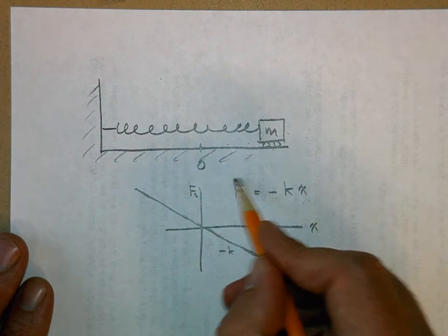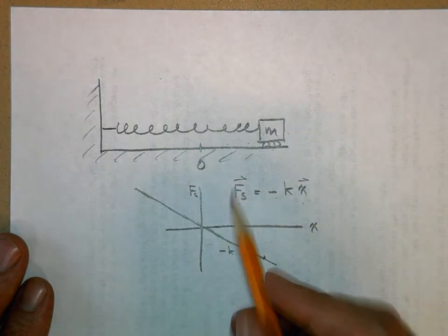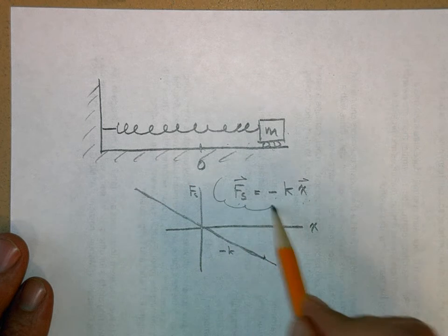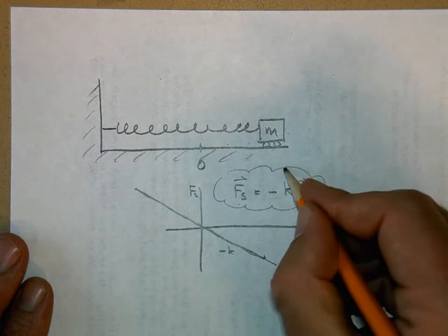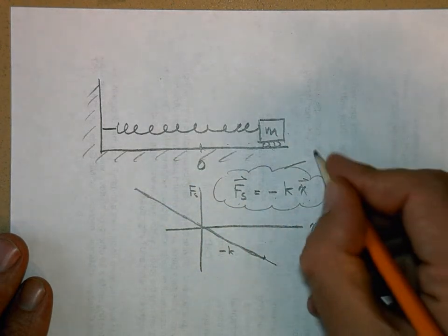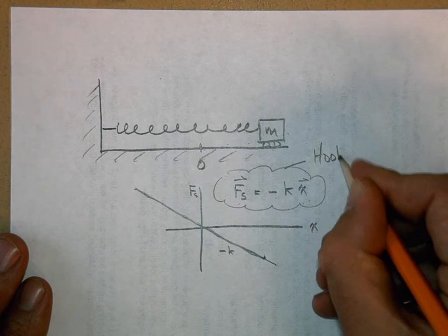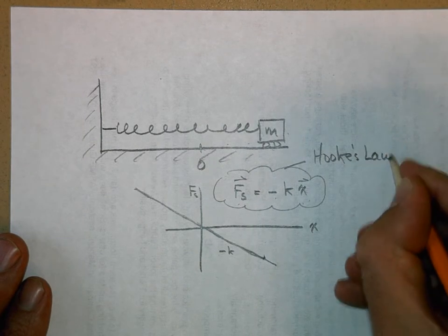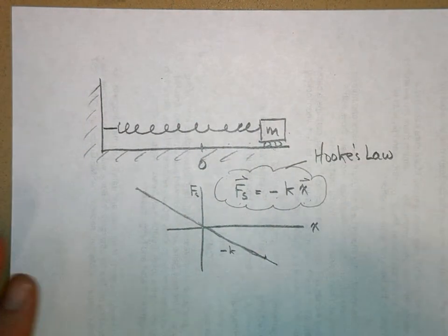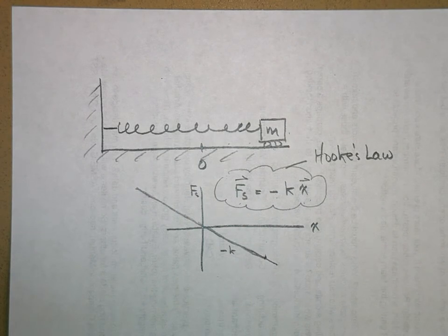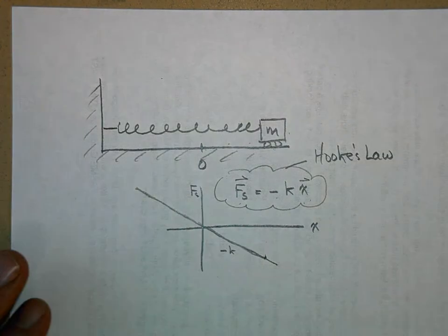This is, and I can go ahead and put vector hats on these because they are vectors. This is called Hooke's Law. After good old Robert Hooke who discovered this many hundreds of years ago.